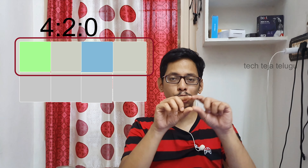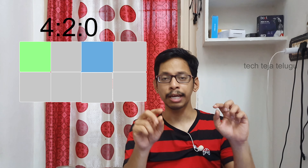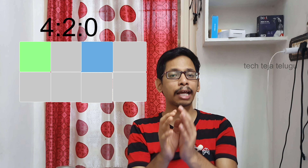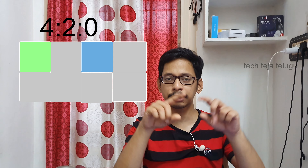Now, we can talk about 4:2:0. The first number 4 means we sample 4 pixels in a horizontal pixel. The second number is 2 — in the first row, 2 pixels out of 4 are the original color. The third number is 0, meaning in the second row, each pixel's color is sampled from the nearest original color. So 2 pixels are original and the other pixels take the nearest color.